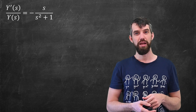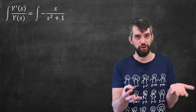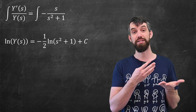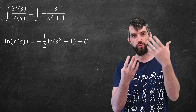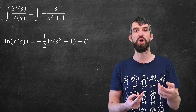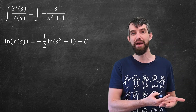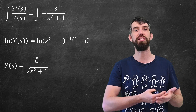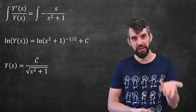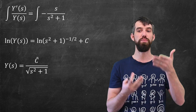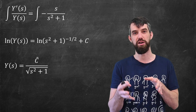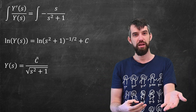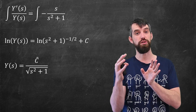Let me solve that separable equation. Integrating both sides: the left gives a logarithm; on the right, substituting u = s² + 1, I get the integral of du/(2u), giving −(1/2)·ln(s² + 1) plus a constant c. Bringing the −1/2 into the exponent using log rules and then exponentiating both sides, Y(s) equals a new multiplicative constant times (s² + 1)^(−1/2), which I write as C divided by s·√(s² + 1). So I started with a differential equation, used the Laplace transform to get an easier differential equation, and solved it.